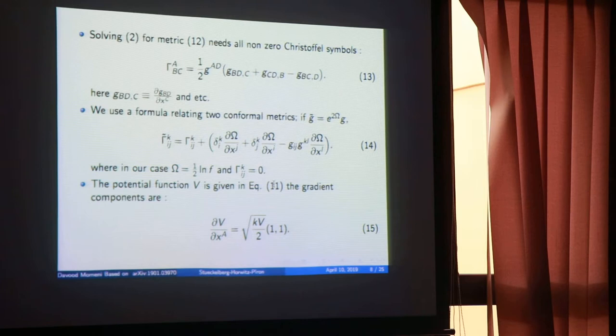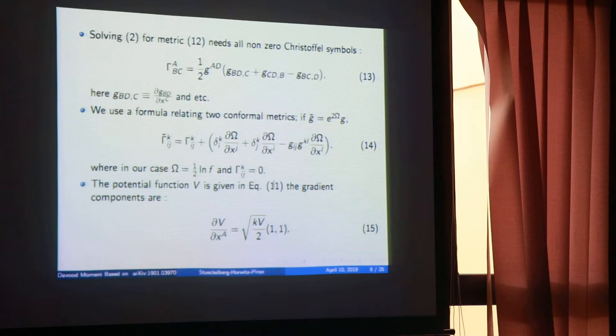G is the original metric, and to make life easier we pass to the conformal metric. By defining the conformal metric, the Christoffel symbols become simpler. This is the geometrical part — equation 14 is the conformal transformation of the original geometry. It is essentially a computational aspect.